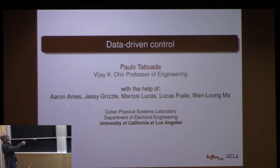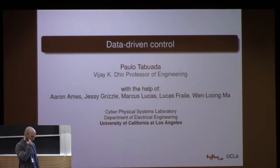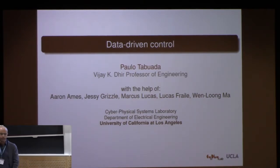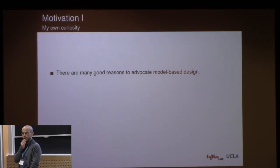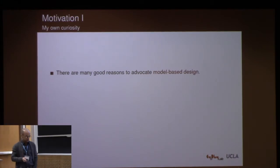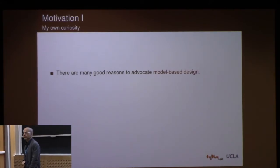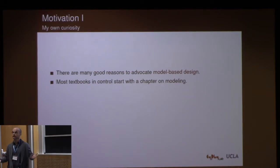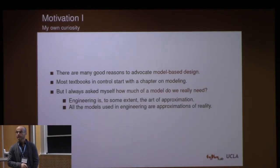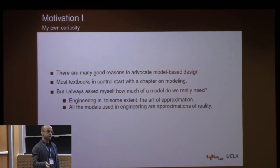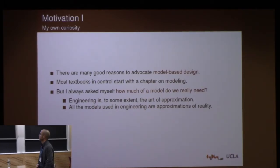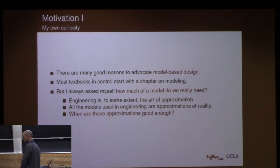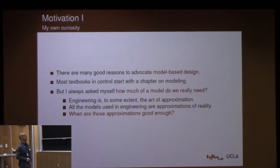This was work that started when I was in a project with other faculty at Michigan, and then it took its own course. Let me start with the motivation for data-driven control. There are many good reasons to do model-based design. If you open a textbook in control, the first chapters will be about modeling, because the model is extremely important. But I've always wondered how much of a model do you really need, because we know that models are wrong, and it seems to make no sense to design systems based on models you know are wrong.